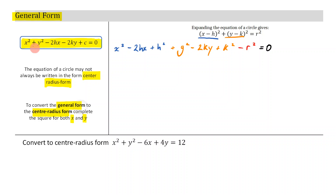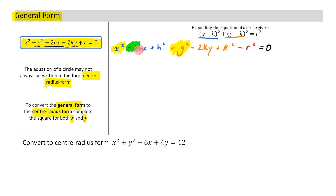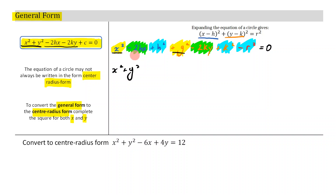The next thing I'm going to do is make it look more like the general form. I have x squared and y squared, and then negative 2hx and negative 2ky. I'm going to move things around — putting x squared and y squared next to each other, then taking the h squared, k squared, and r squared terms and grouping those together.